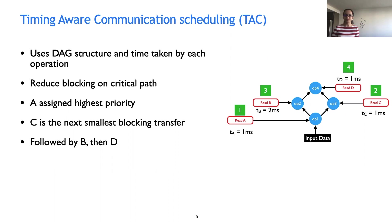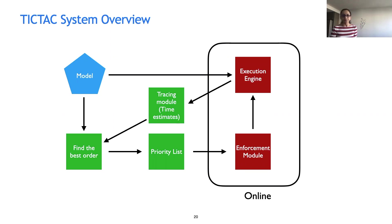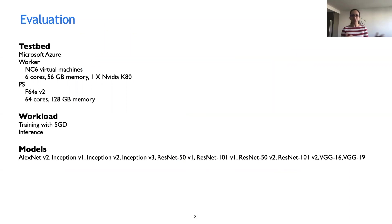This is a high-level system overview. We take as input the model or the computational DAG, and in the case of timing-aware scheduling, we also take estimates from a tracing module. This information is used to find the best order for parameter transfers, generating a priority list. An enforcement module enforces the priority of transfers at the parameter server. We test TicTac across multiple workers and parameter servers on Microsoft Azure. We evaluate iteration time improvement in a training setting with stochastic gradient descent, and in an inference setting where agents fetch the latest parameters from a centralized server, testing a variety of models.